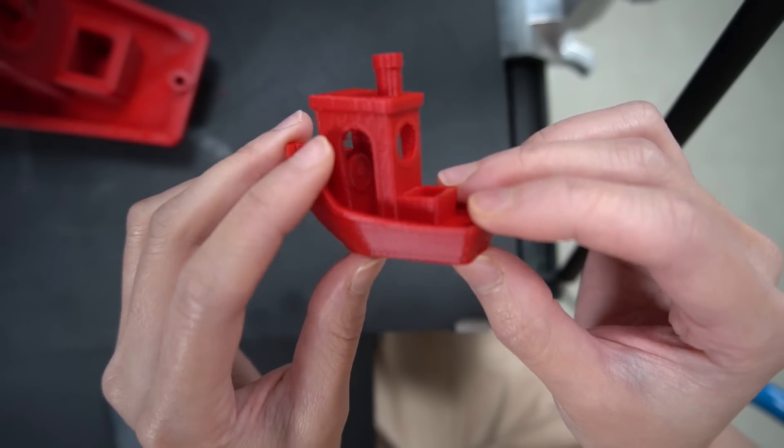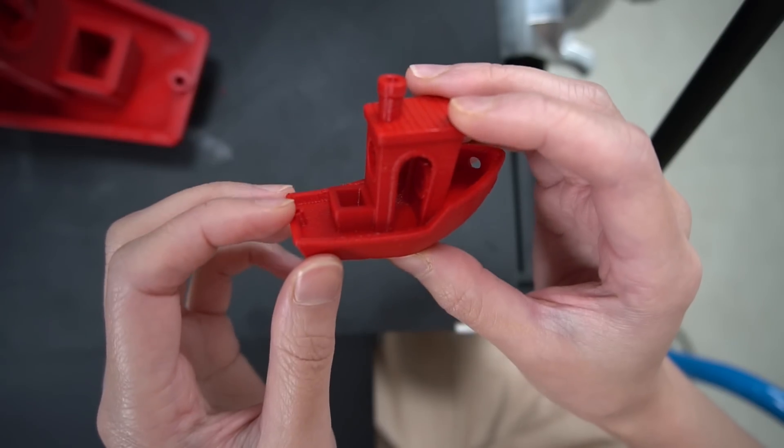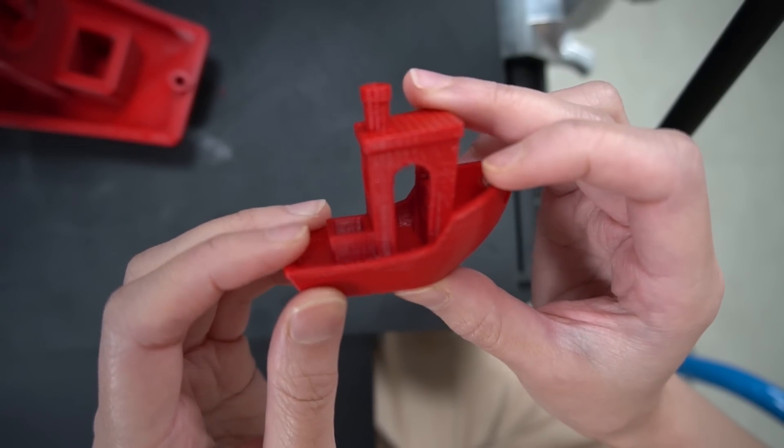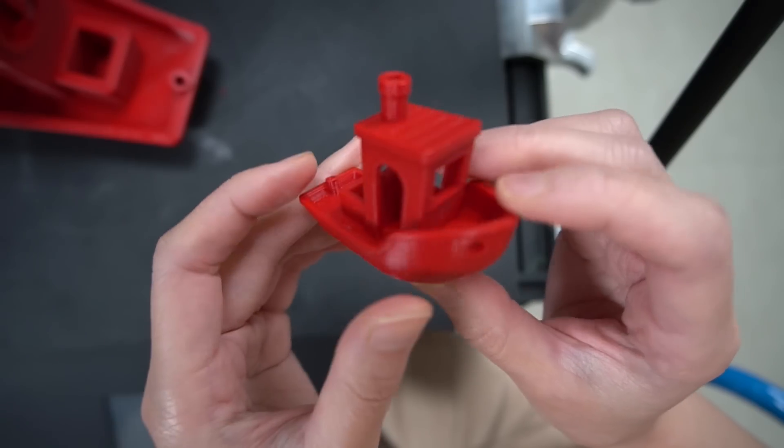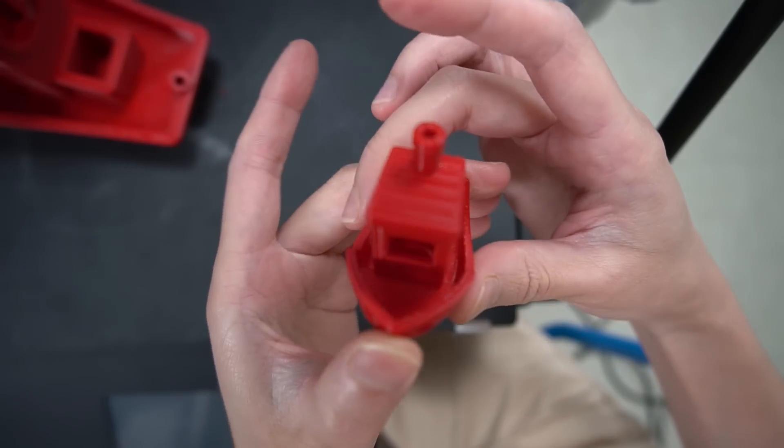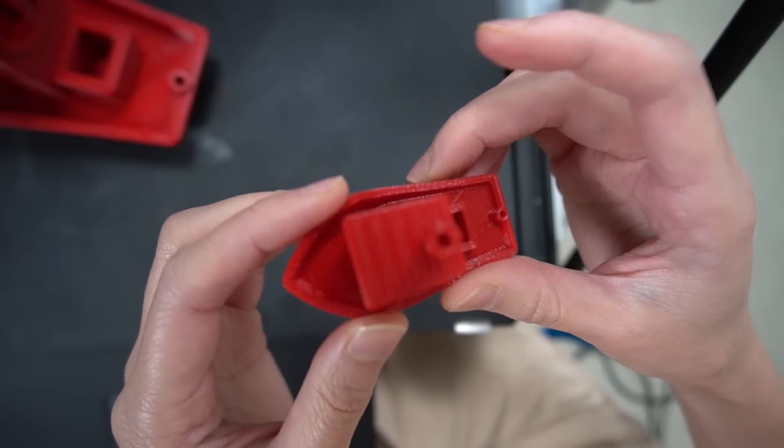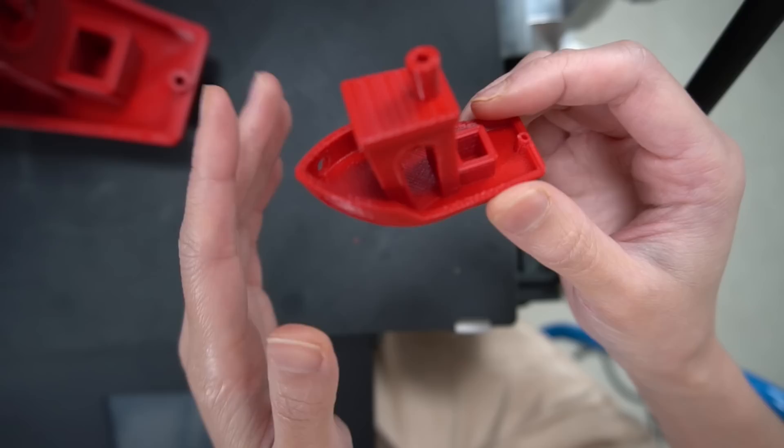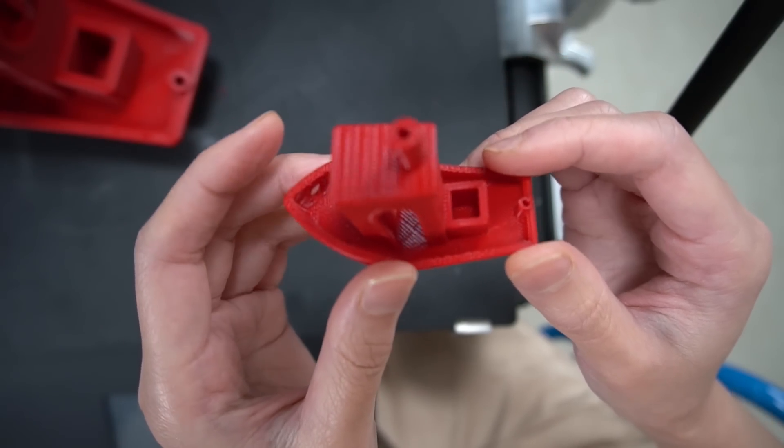This is a standard size Benchy boat test print we use to calibrate printers. It's printed at 0.2mm layer height with a 0.4mm nozzle and took an hour and 20 minutes to print.